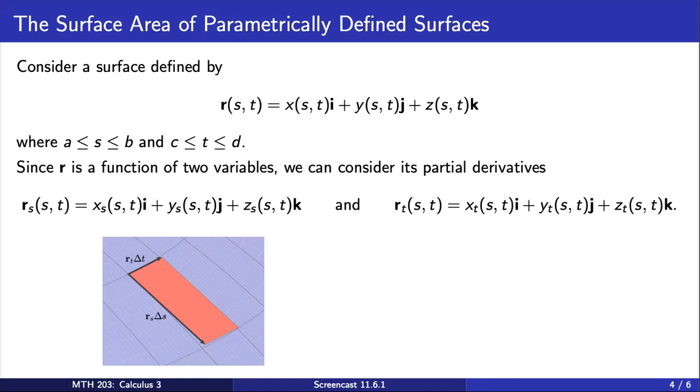The lengths of sides are given in terms of the partial derivatives that we have here. Recalling facts about the cross-product, we can find the area of this parallelogram using the magnitude of the cross-product of these two vectors.